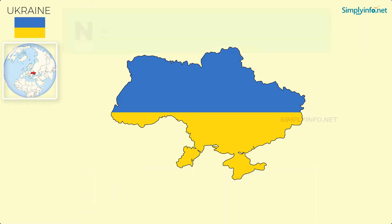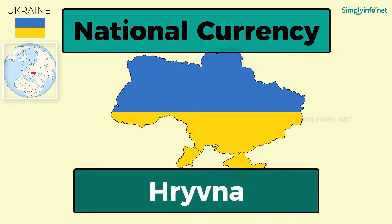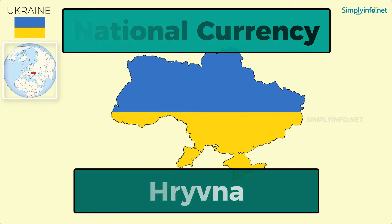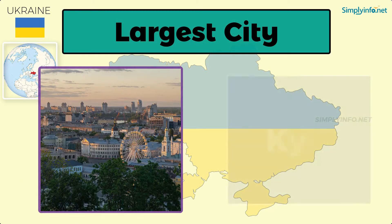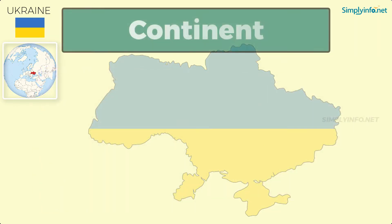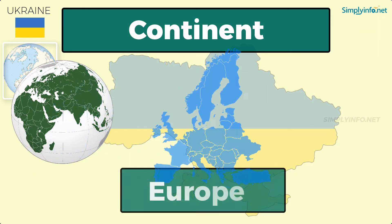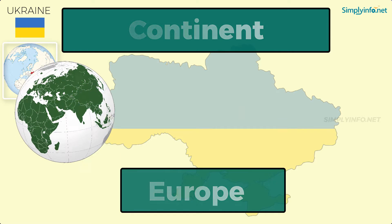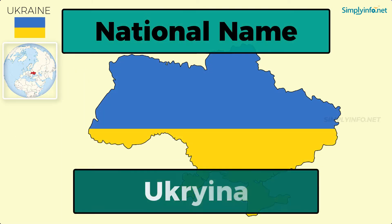National currency: Hryvna. Largest city: Kyiv. Continent: Europe. National name: Ukraine.